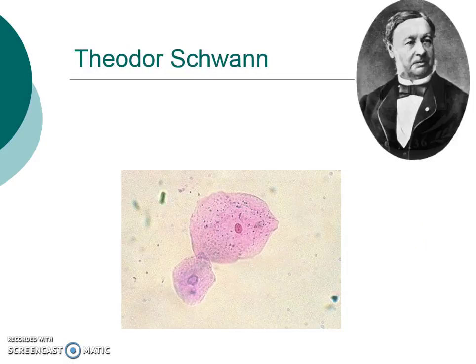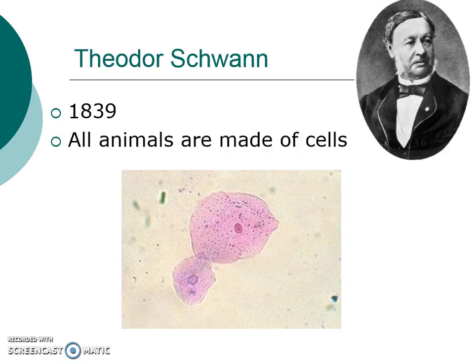Then came along Theodore Schwann in 1839 — these guys were pretty close together in their discoveries. Schwann looked at cells and said all animals are made of cells. One way to remember to keep the guys separated: Schwann rhymes with swan, and a swan is an animal. So Theodore Schwann is the guy that said all animals are made of cells, and then the other guy, Schleiden, has to be plants. That's one thing to help you remember those guys.